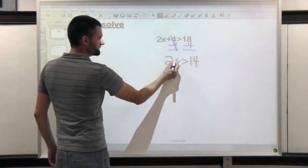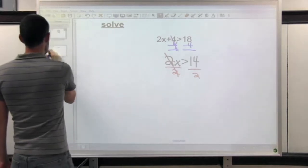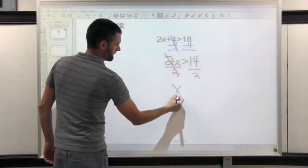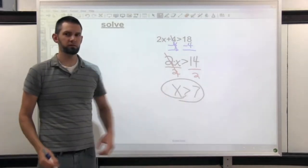Now it's multiplied by 2. Let's divide by 2. That cancels, telling me that my solution is x is greater than 7.